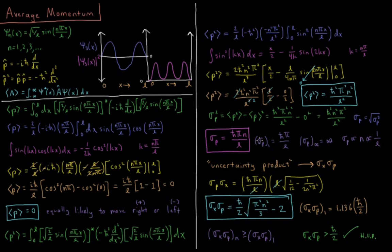For n = 1, the uncertainty is h-bar π over l. For n approaching infinity, it goes to infinity — the uncertainty scales linearly with n. The uncertainty in momentum is proportional to the quantum number and inversely proportional to the length of the box. As the box gets smaller, we get more uncertainty in momentum; as the box gets bigger, we get less uncertainty in momentum.